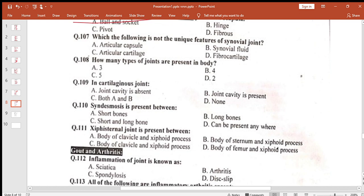Humerus forms ball and socket joint with scapula. Which is not a unique feature of synovial joint? Fibrocartilage us mein nahi hota. How many types of joints are present in body? Three types.